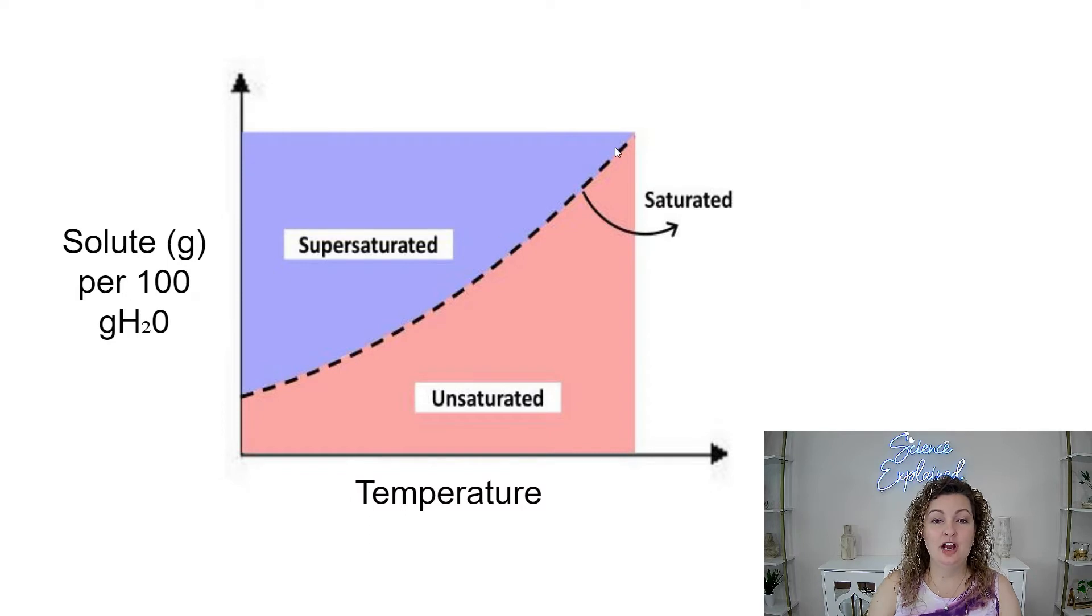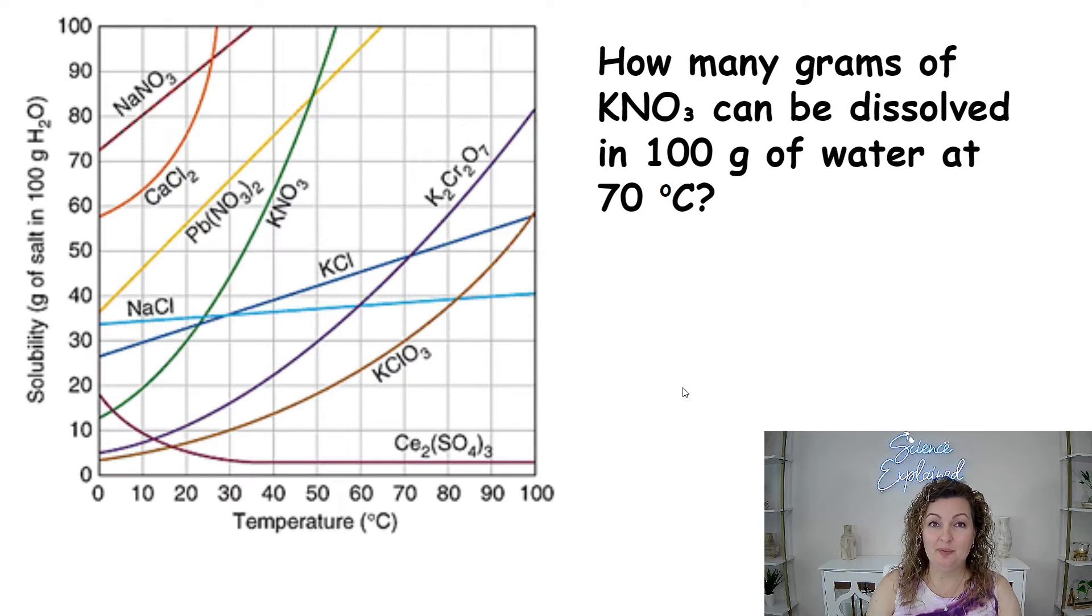And then over top of the line, you can see that we have supersaturated and this is where we have too much solute in our solution and it will fall out of solution. So if it cools down, you can see it falling out of solution or perhaps it's already cooled down and it's just sitting at the bottom of the container undissolved. So let's go ahead and try a couple practice questions.